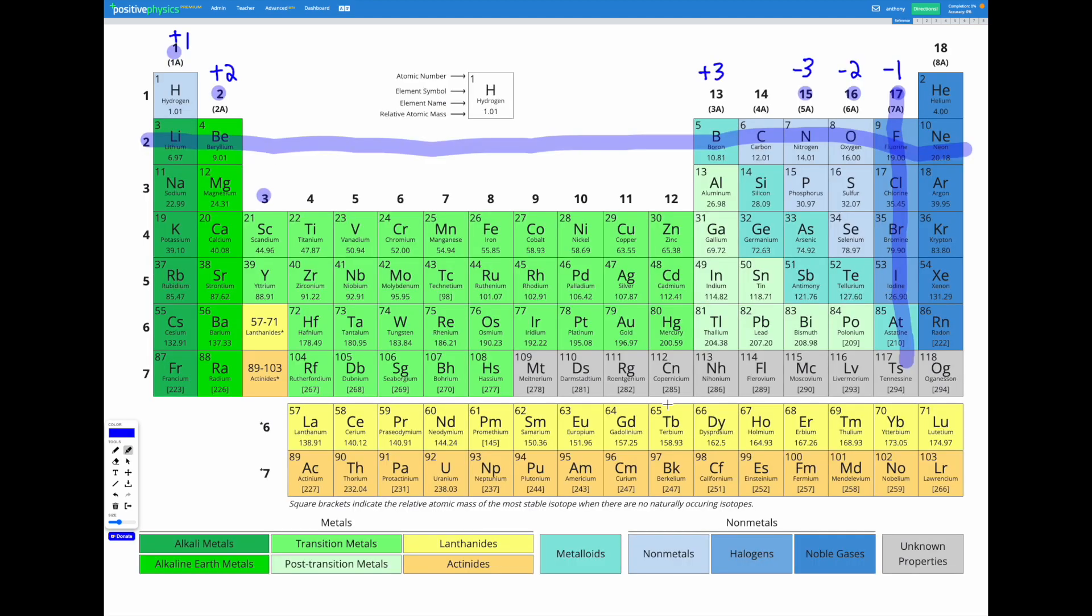So it's important to remember our trick: groups 1, 2, and 13 have to lose electrons, thus becoming positively charged when they form ions with charges of 1, 2, and 3 respectively. And groups 15, 16, and 17 need to gain electrons, thus becoming more negatively charged with charges of negative 3, negative 2, and negative 1 respectively. That's our shortcut that we can use in these problems.